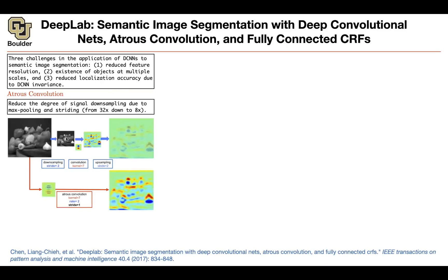If you want to do your original downsampling — and this is your image — remember that downsampling is because of stride. It's not because of max pooling, it's not because of convolution, it's because of your stride. So if you stride by two, that's going to be half the resolution of the original image.